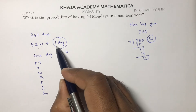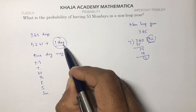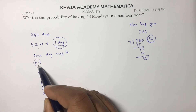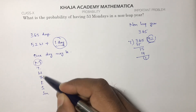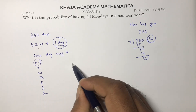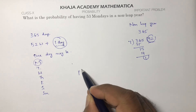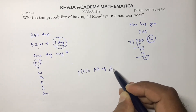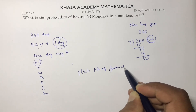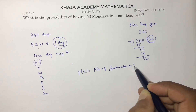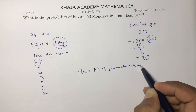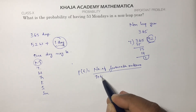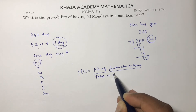53 Mondays will be decided by this one extra day. In that one extra day, Monday appears only one time, so we have seven total cases. The probability of an event equals the number of favorable outcomes divided by the total number of outcomes.